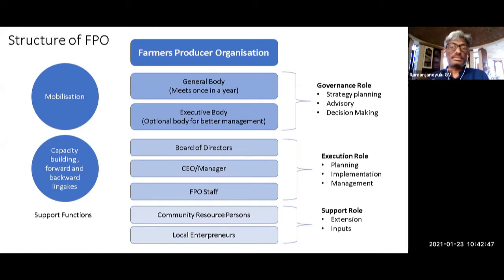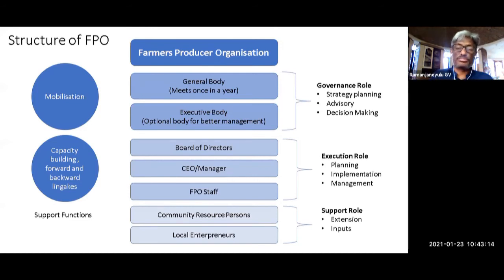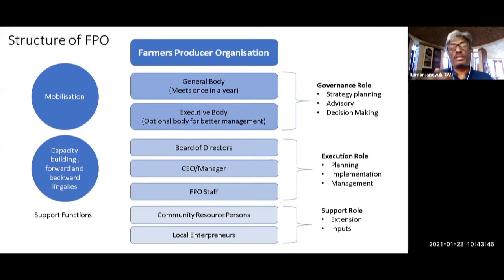Then comes the support role — production planning, technical support. This support can come from line departments, community resource persons, or a combination model. Similarly, for input production like seed production or food processing, the FPO need not do everything itself — it can identify who in the village can take up these activities. Any activity that an individual can handle should be done by the individual; only when it becomes too large for a household should the FPO step in, otherwise decision-making becomes extremely difficult.